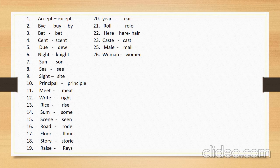Number six: 'night' (raat). Its similar in sound word is 'knight' (K-N-I-G-H-T), meaning a commander — sipahsalar, one who leads. Number seven: 'sun' (suraj — the sun). Its similar in sound word is 'son,' meaning beta — a son.